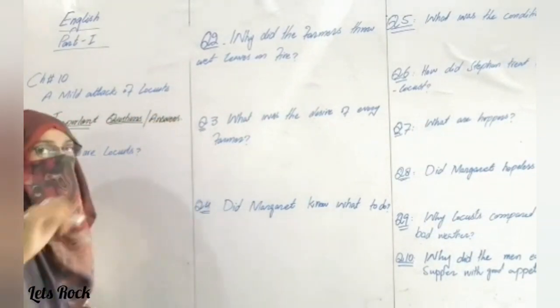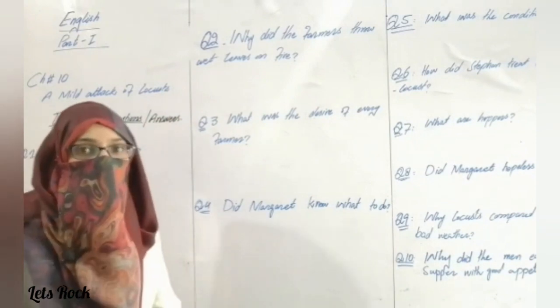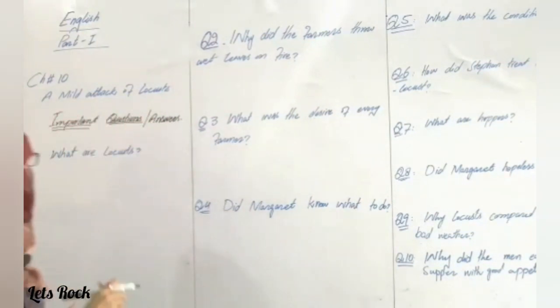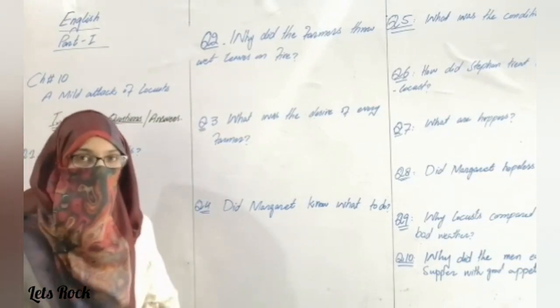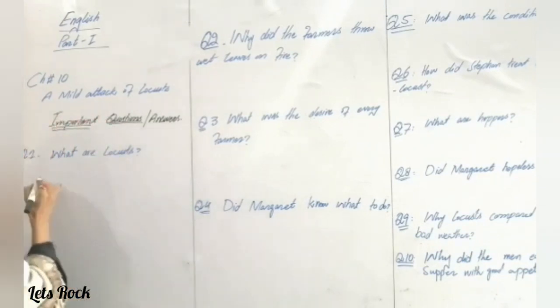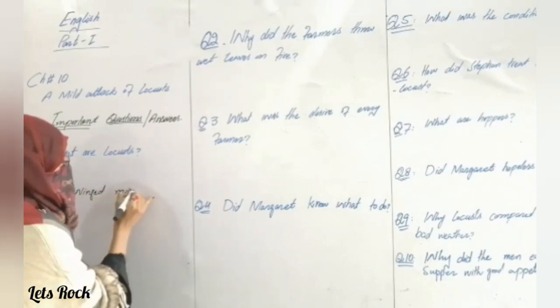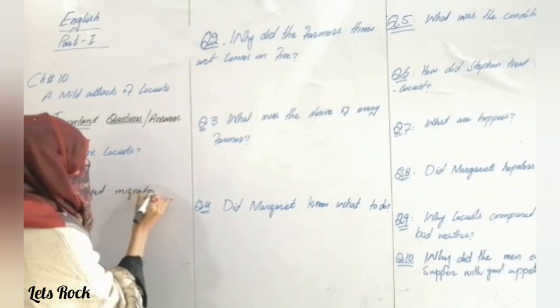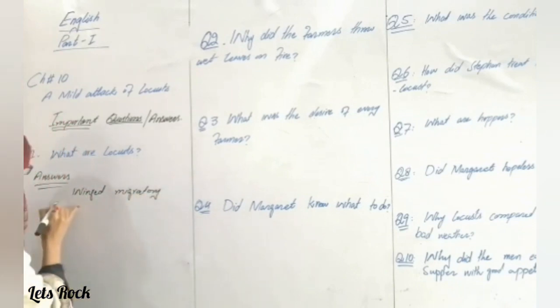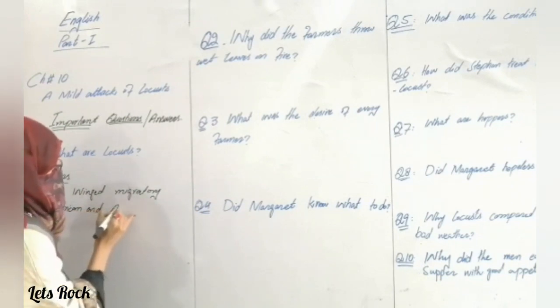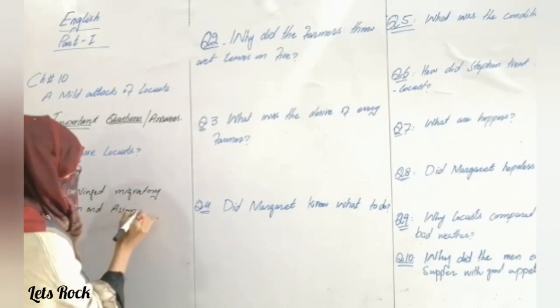Question number one: What are locusts? Dear students, locusts are winged migratory African and Asian insects.